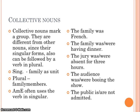We have collective nouns. They mark a group, and they're different from other nouns since their singular forms can also be followed by a verb in plural. When you talk about family as a unit, you use singular; when you talk about the family members, you use plural. In American English, however, you often have the verb in singular even when talking about family members. For example: the family was French, and the family was having dinner or were having dinner. The jury was or were absent for three hours. Same applies to audience and public.